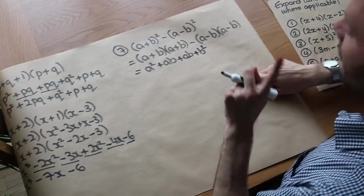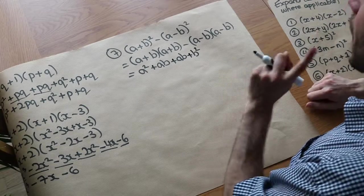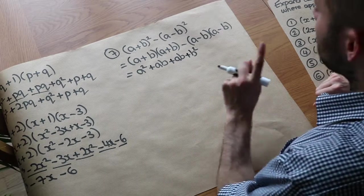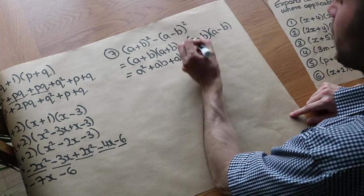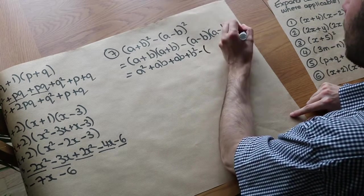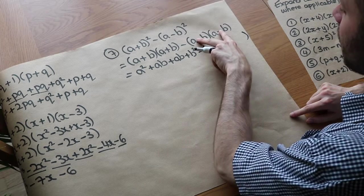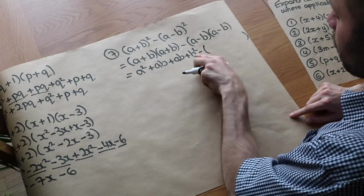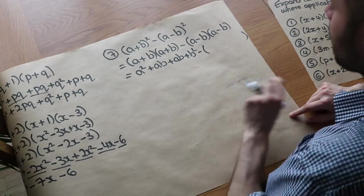Now this is where you have to be very careful. If you ever expand an expression that you're subtracting, always leave it in a bracket first. So we're going to expand the second pair and put the result in a bracket with a minus sign in front: minus, and then all of this expanded inside a bracket.